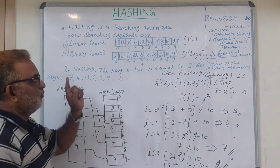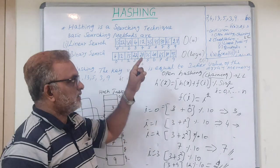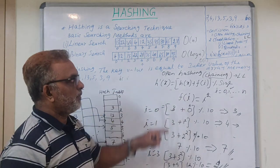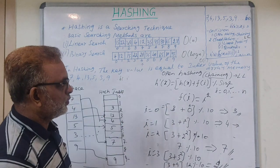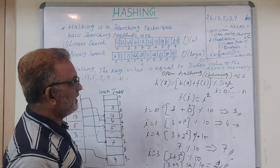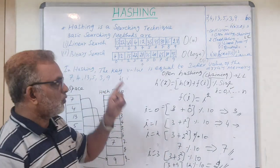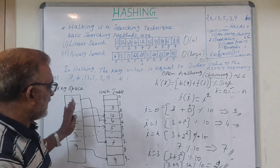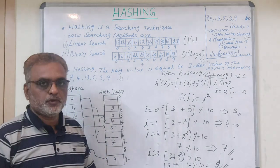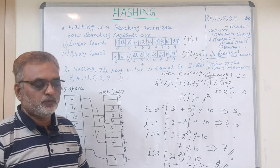So far we have discussed what hashing is and the problem of collision. Collision can be avoided using open hashing with chaining, or closed hashing with linear probing and quadratic probing. I gave sufficient examples; I hope you understood the concept. Thank you.